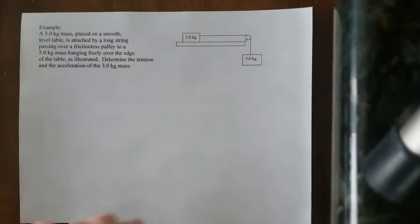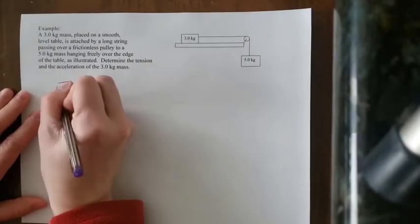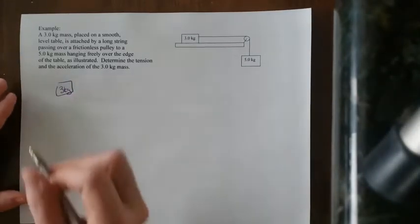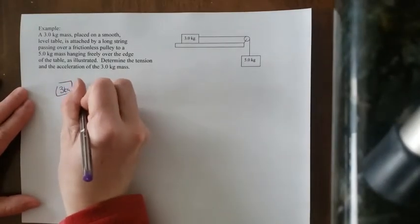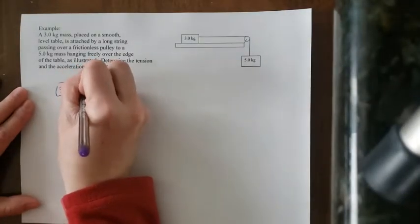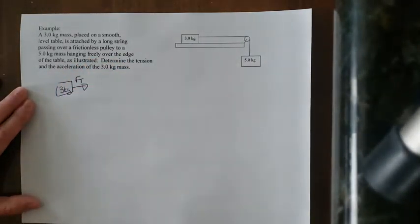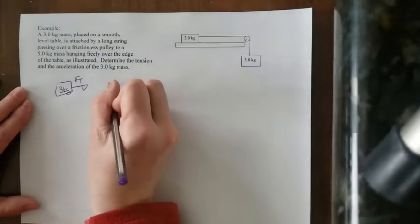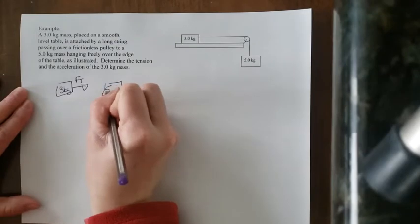So to draw a free body diagram, you simply just draw a box, write down how big it is, and an arrow pointing in the direction of the force. The only force here is the force of tension, Ft. The other mass is a five kilogram mass and it's just hanging. So we have five kilograms.